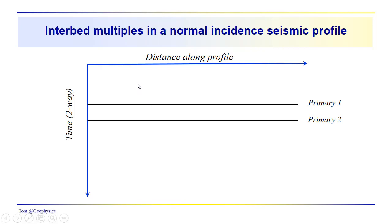So, now let's take a look at the problem for the interpreter. We've got things in two-way time here. We're looking at a stack seismic section in this case. So, these would be our zero offset, or our normal incidence,